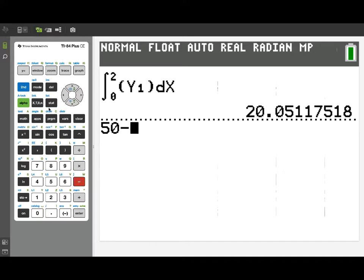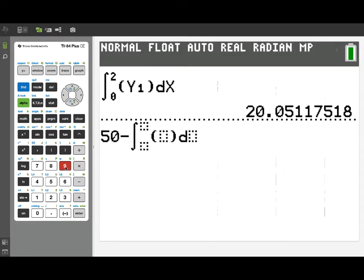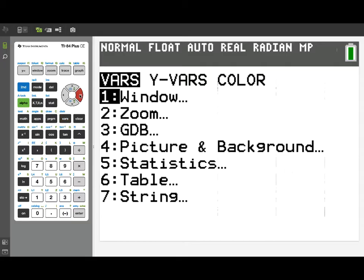First of all, we need to take into account the initial pounds of bananas on display, 50. The bananas are being removed at the rate y1. So over that eight-hour time period, we'll need to integrate from 0 to 8, y1, dx, and subtract that off, because those bananas are being removed.